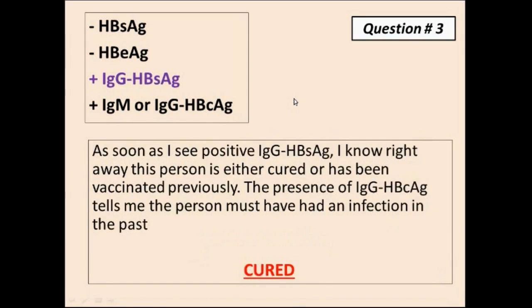Question number 3. First, I look at the presence of surface antigen. As soon as I see that there is no surface antigen present, that means this person is not infected. Then I look at the antibodies against the surface antigen and I see that they are positive. As soon as I see positive antibodies against the surface antigen, I know right away this person is either cured or has been vaccinated. The presence of antibodies against the core antigen tells me this person must have had an infection in the past.